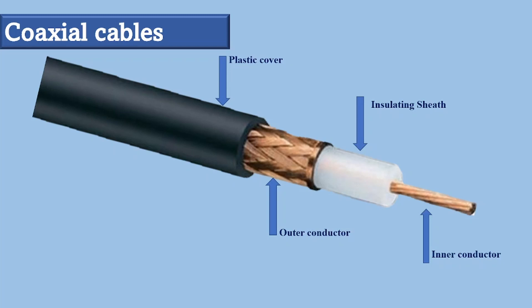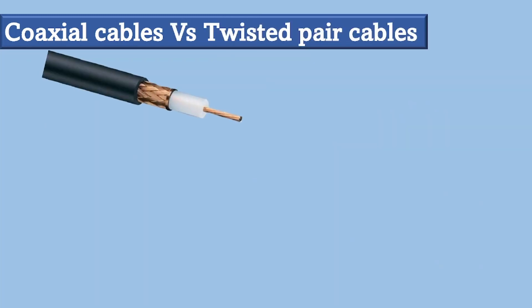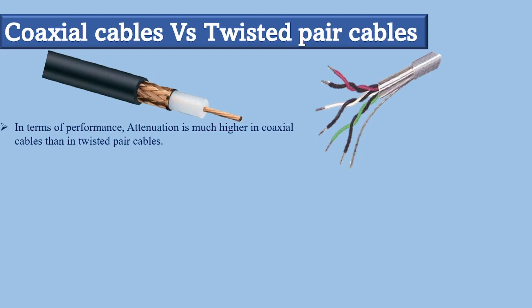Now let's compare coaxial cables with twisted pair cables. In terms of performance, attenuation is much higher in coaxial cables than in twisted pair cables. In other words, although coaxial cable has a much higher bandwidth, the signal weakens rapidly and requires the frequent use of repeaters.